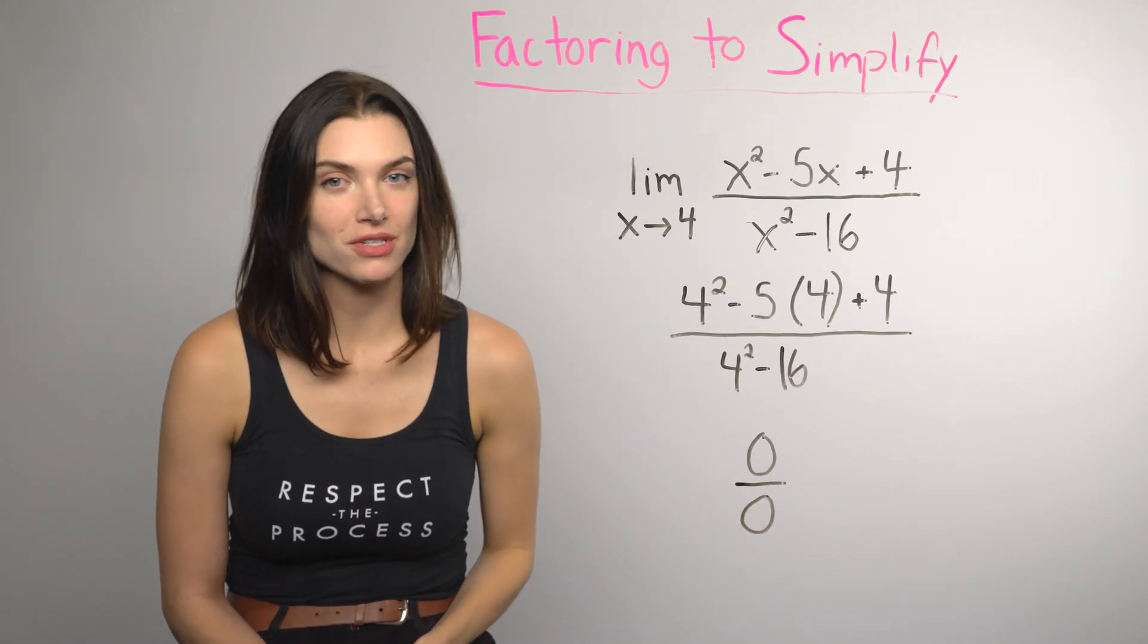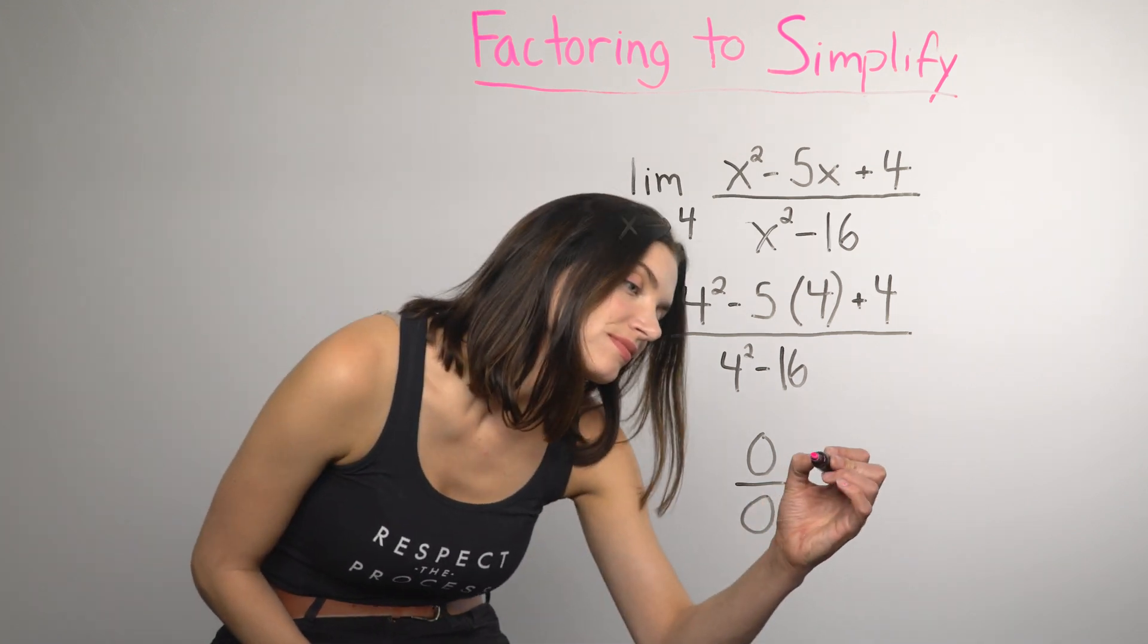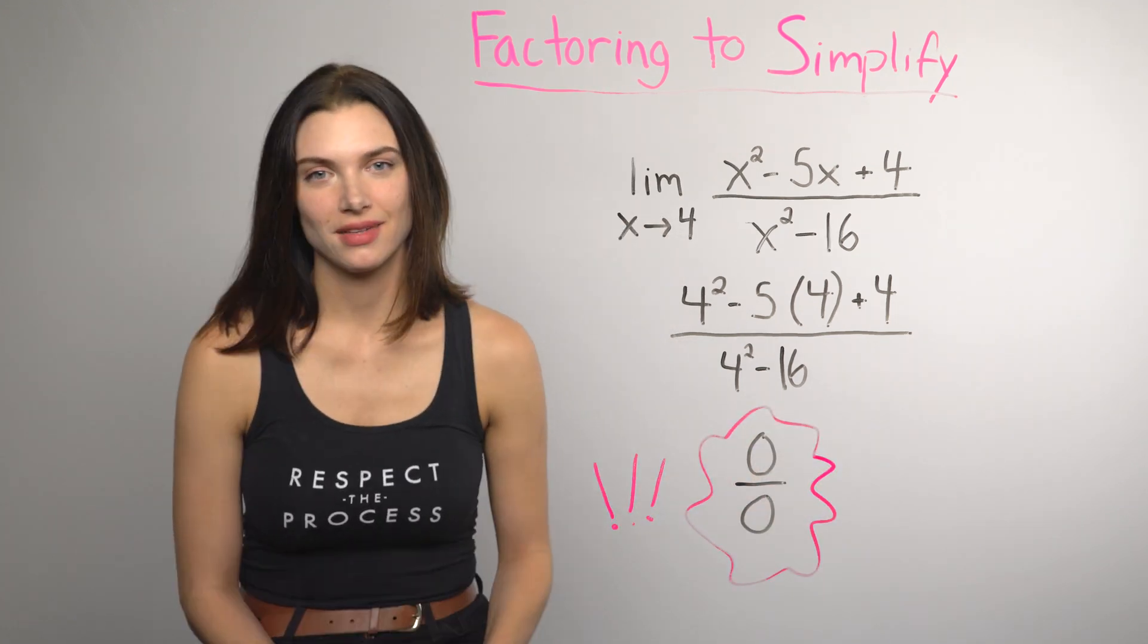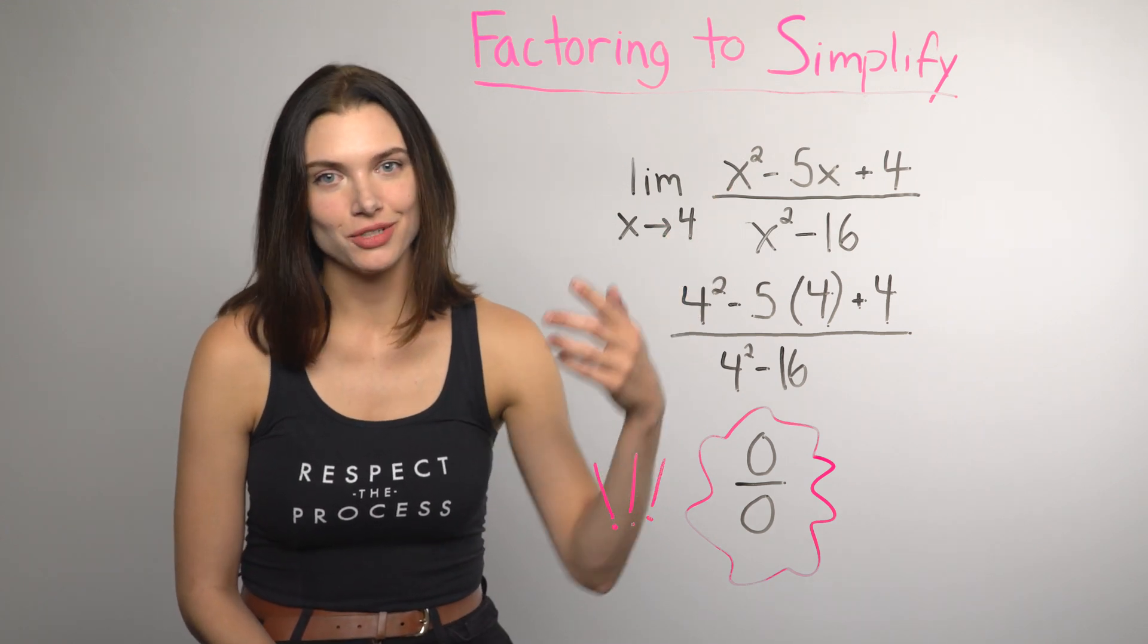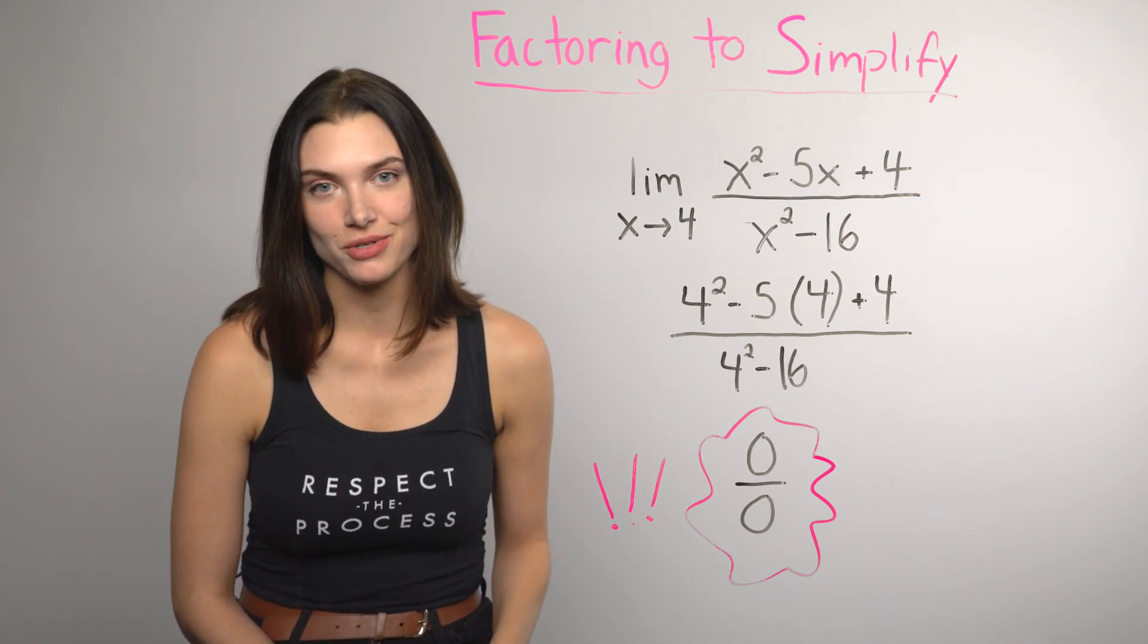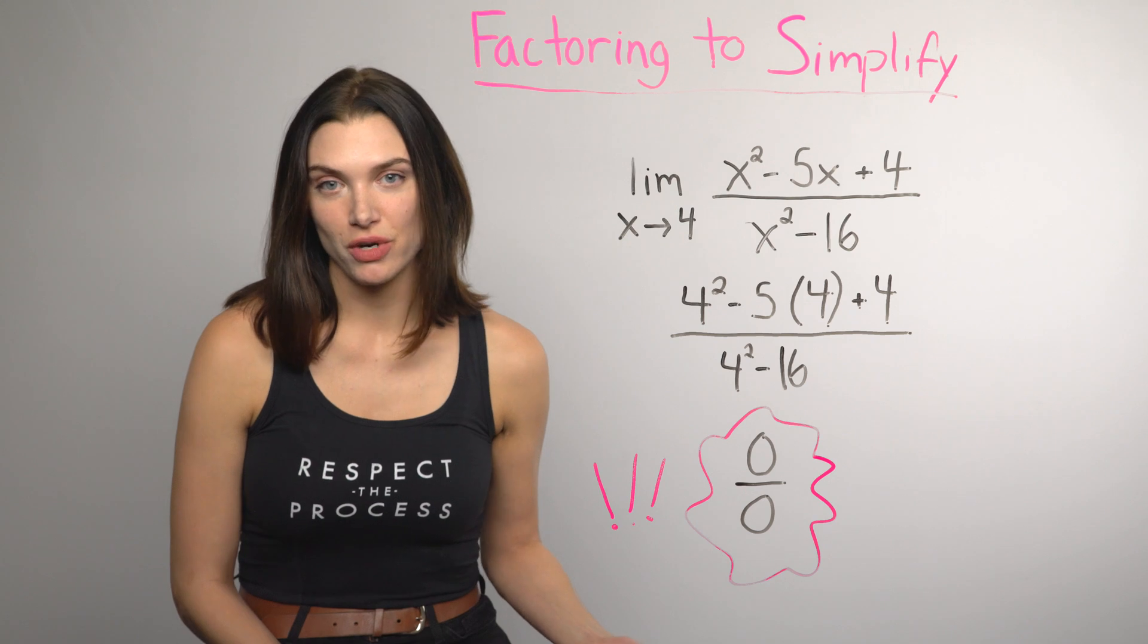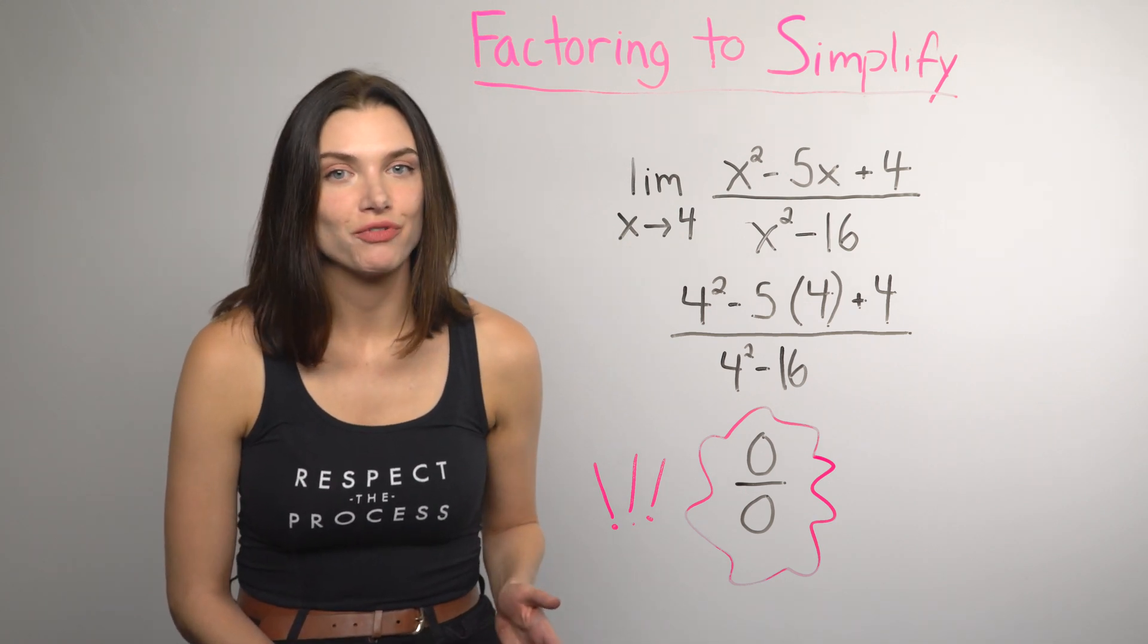Here's another function where the result of direct substitution is 0 over 0. When you see higher powered polynomials like this x squared, your best bet is to try factoring to simplify. Whether the situation is the difference of squares or difference of cubes, a perfect square trinomial, or even a grouping situation, factoring will usually help you find what you're looking for.